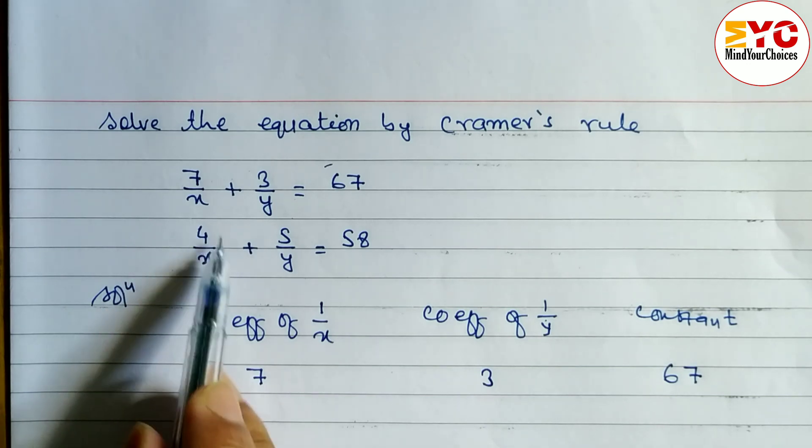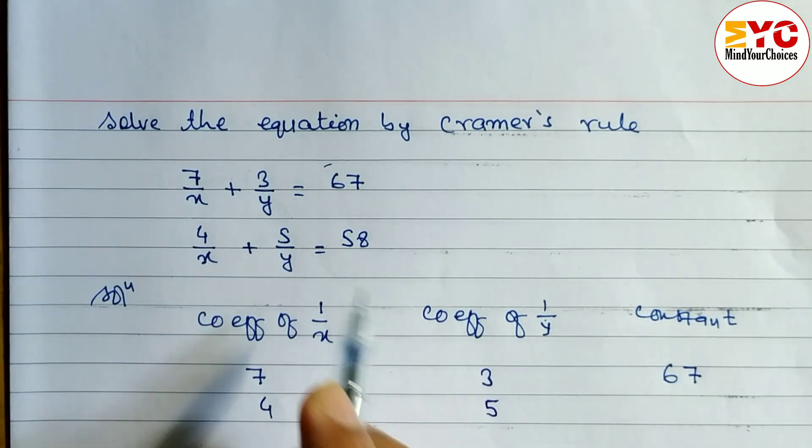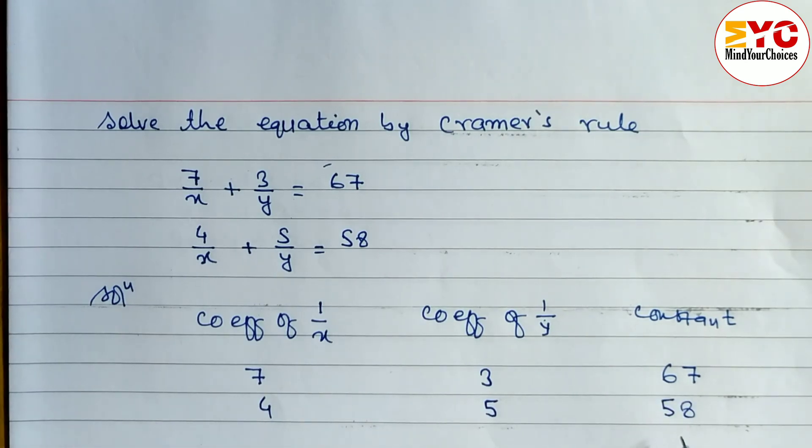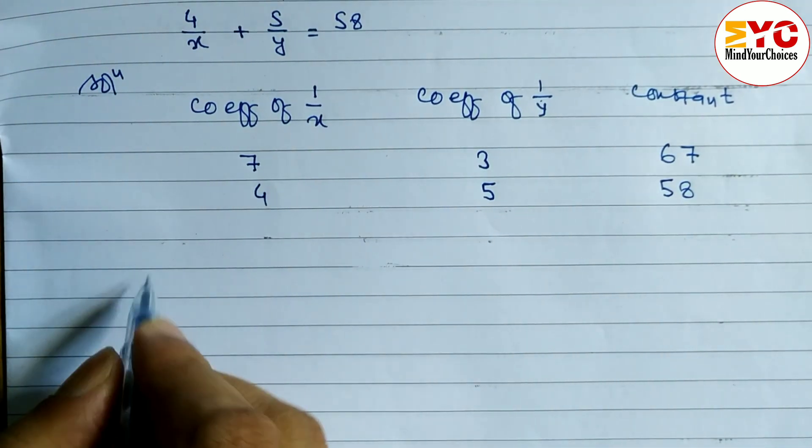And here constant number 67, so we have to write here 67. Here what is the coefficient of 1 by x? 4, so we have to write down 4. Here 5, so we have to write here 5. And similarly here constant number is 58, so 58. After this we have to find out d, d1, d2. Then we have to find out the value of x and y.